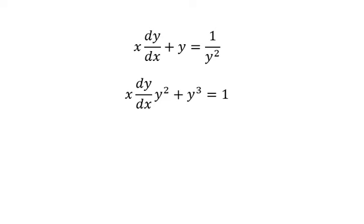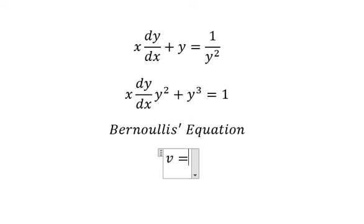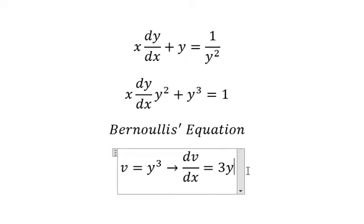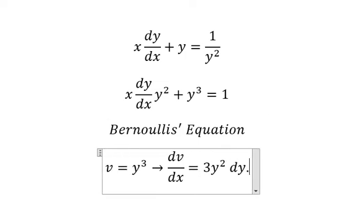Next, we apply Bernoulli's equation. So in this situation, I will put v equals to y to the power of 3. We do first derivative for both sides. We have dv over dx equals 3y square dy over dx.